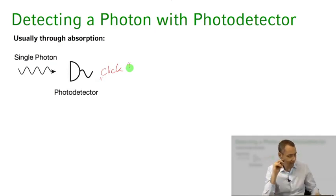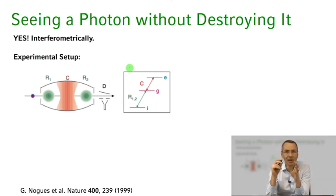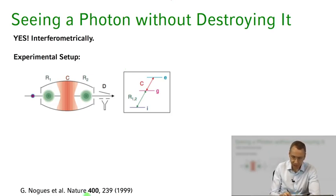And the question is can you actually detect this, can you find a way to do this in a fashion where you do not destroy the photon, where we can know whether there is a photon or not without actually destroying it. And yes, this can indeed be done and it can be done through interferometric means. And here's the actual experimental setup from Serge Haroche's group, Gilles Nogues et al. in Nature 1999.